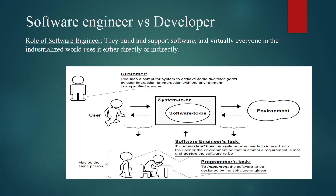A software engineer is much more than just a coder. Software engineers are the ones who build and support the software, and everyone involved directly or indirectly is part of the software engineering process — customers, developers, coders, people who design front-ends, and people who work with environments. The software engineer's task is to understand and implement all of this and come up with a work product.